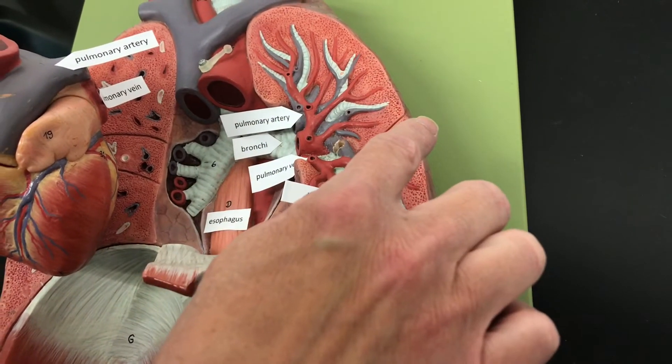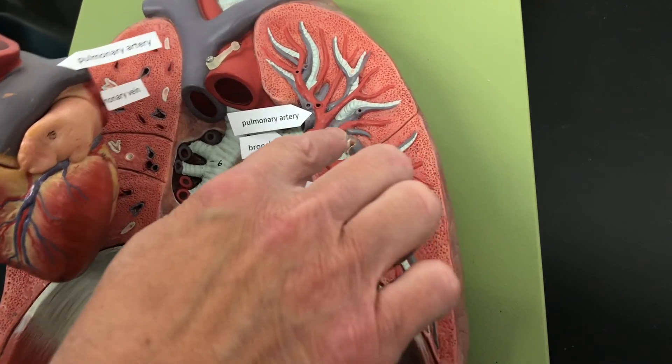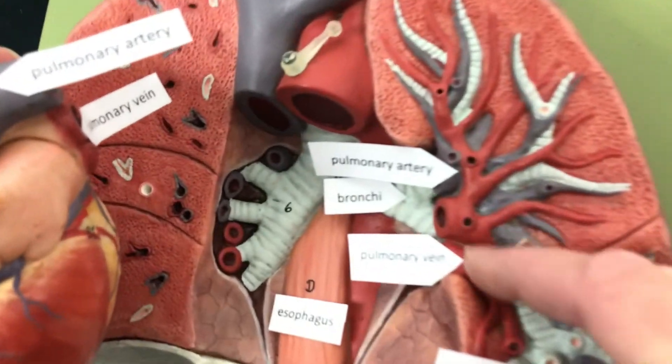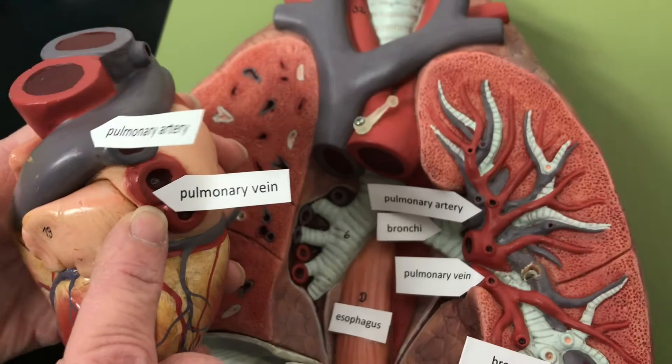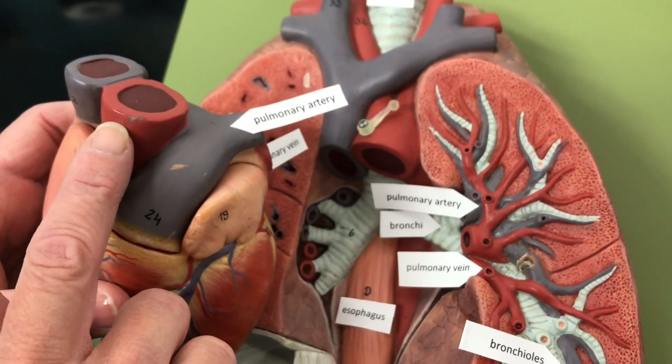So carbon dioxide gets off. Oxygen is going to go into the blood vessels. It's going to come back to the heart through the pulmonary veins. So here's the pulmonary veins here. And then this oxygenated blood is going to get pumped out to the body through the aorta.